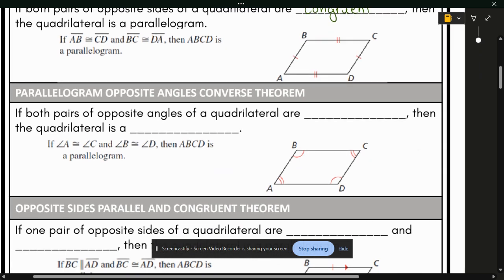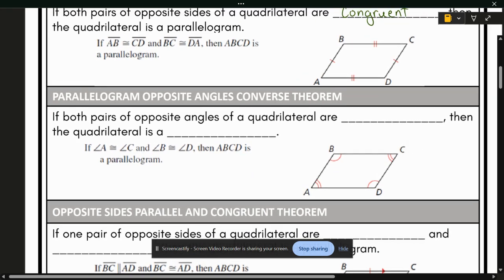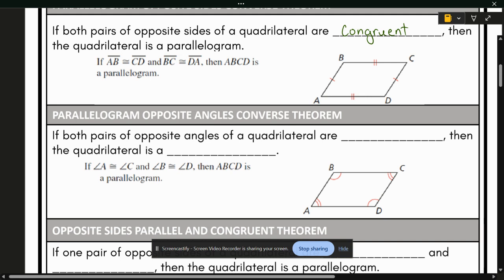Next up, we've got a parallelogram opposite angles converse theorem. The first one was about the opposite sides, this one is about the opposite angles. If both pairs of opposite angles of a quadrilateral are congruent, then the quadrilateral is a parallelogram.